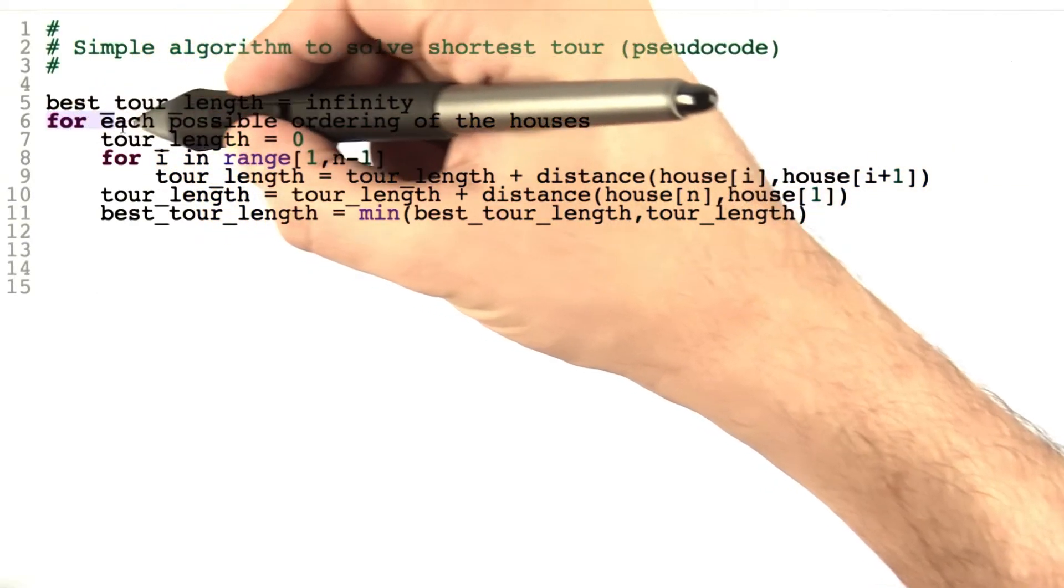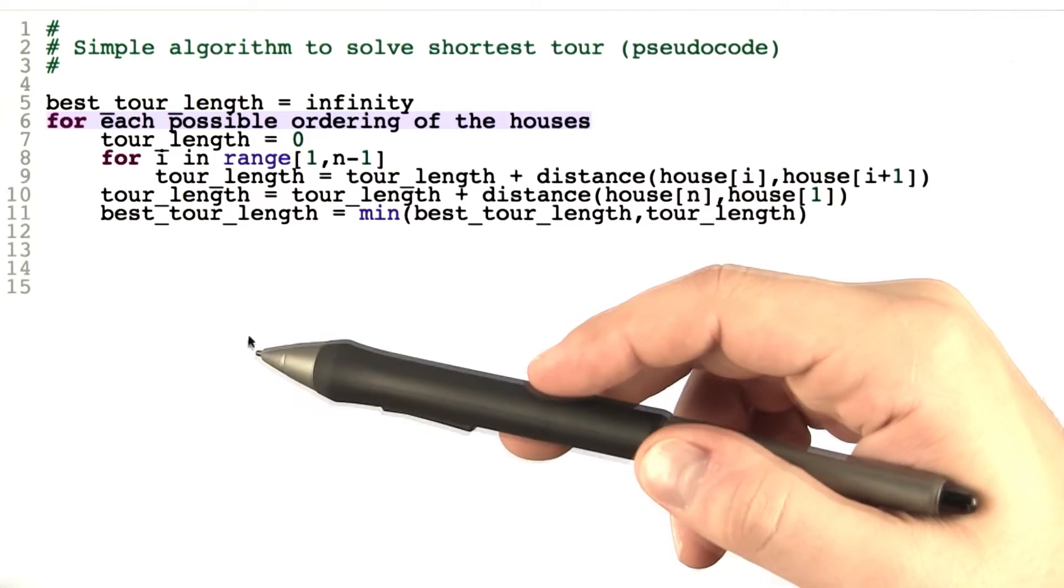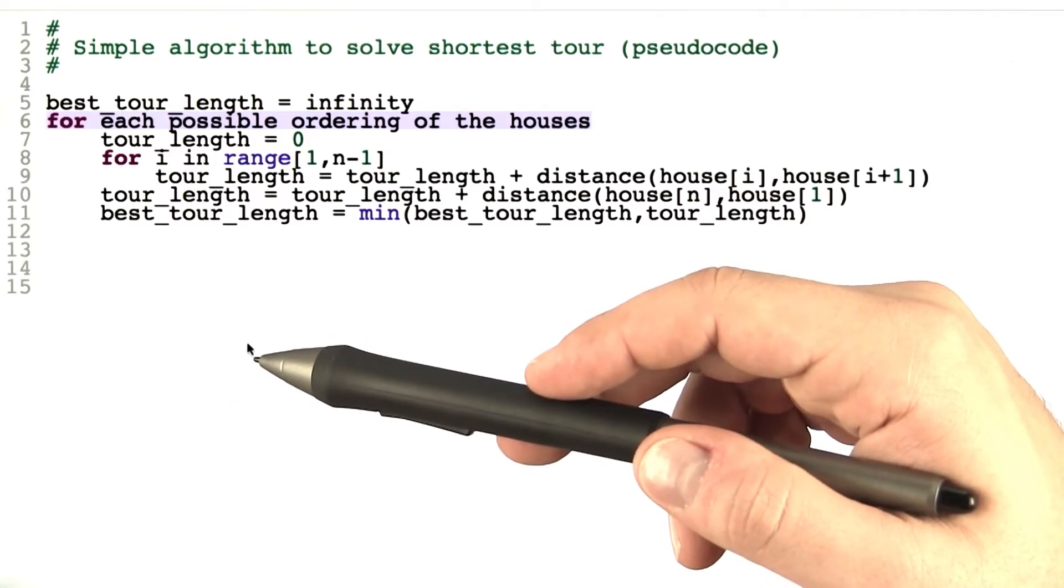Because what a simple algorithm would do to solve shortest tour is that algorithm would simply try all possible orderings for the houses.